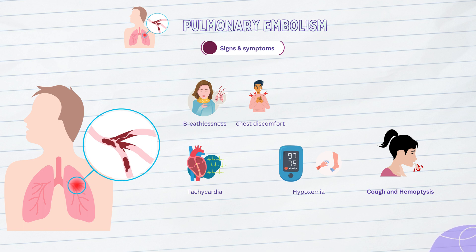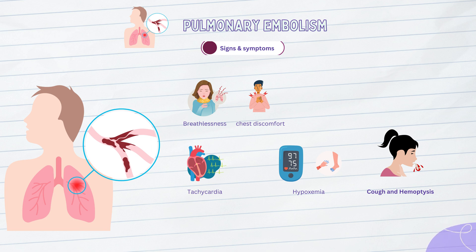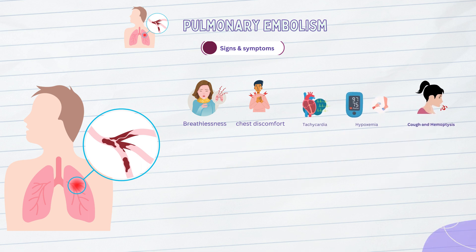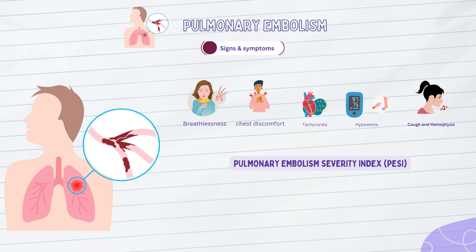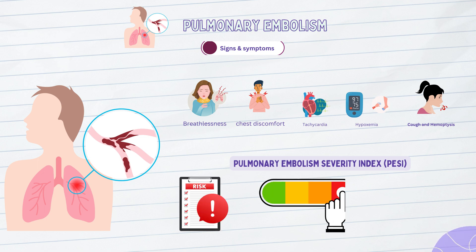When a pulmonary embolism suspicion emerges in the ER, healthcare workers employ a variety of techniques and examinations to categorize individuals into distinct risk groups. This aids in treatment decision-making and determining the right degree of care. Risk stratification tools, such as the Pulmonary Embolism Severity Index (PESI) or the simplified revised Geneva score, take into account factors such as age, vital signs, oxygen levels, and the presence of comorbidities to classify patients as low, intermediate, or high risk.